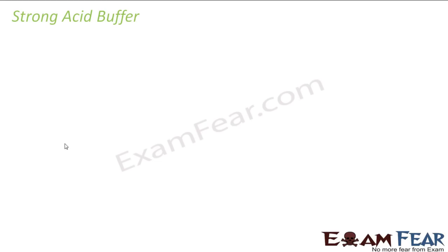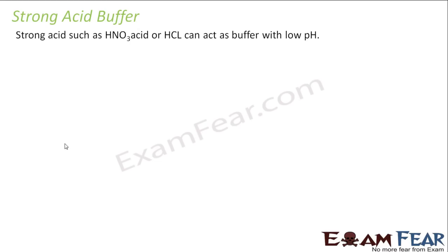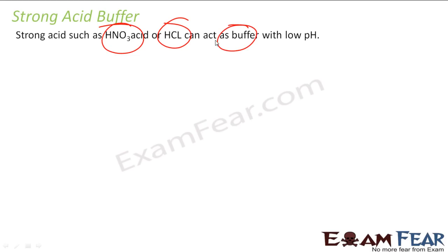Strong acid buffer: if you take a very strong acid like HNO₃ or HCl, they are also a buffer with a low pH. Why? Because even if you add some OH⁻ ions, they will be used up, and the change in pH will be very, very less because it's very, very acidic.